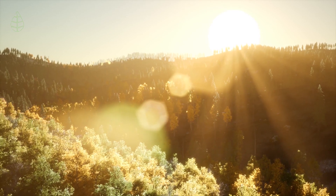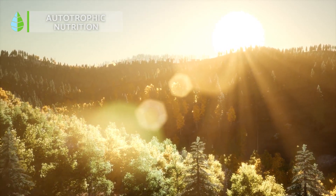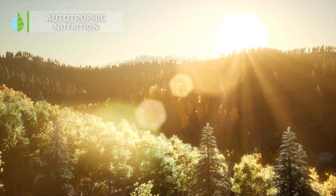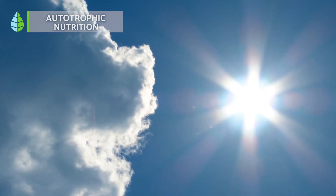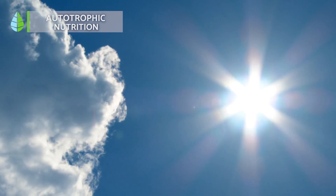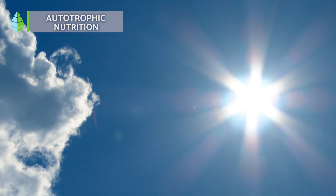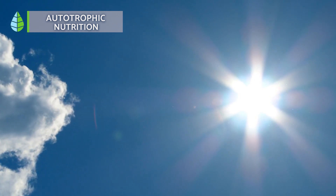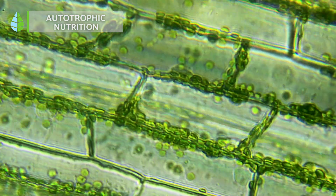Autotrophic Nutrition. This type of nutrition occurs when an organism can create its food from inorganic substances — that is, those that do not contain carbon and that are not synthesized by living beings. An example of this is sunlight or carbon dioxide.